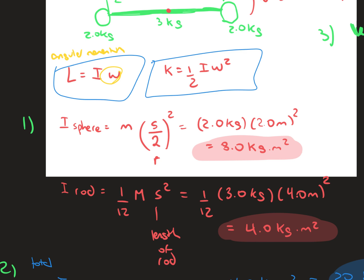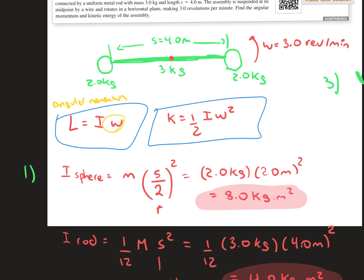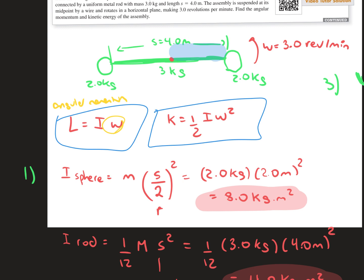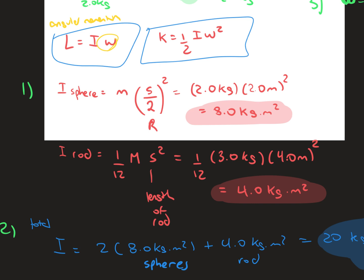First we have to find the moment of inertia of both the sphere and the rod. Since we have two spheres, the radius is going to be the distance from one sphere to the center of the rod. So we have a radius of 2 meters.